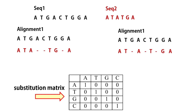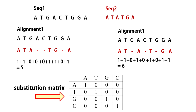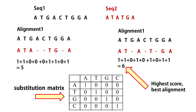If there is a perfect match, such as A matching with A, T with T, G with G, the score is 1, otherwise 0. Following this simple algorithm, these are the scores of the two alignments. The alignment with the highest score is the best alignment.